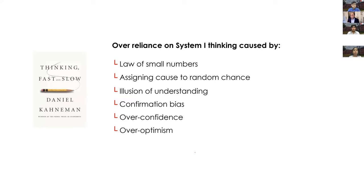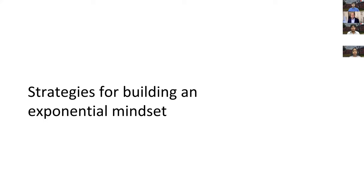This over-reliance on System 1 thinking prevents us from understanding exponential worlds, because it is caused by factors like the law of small numbers, assigning cause to random chance, an illusion of understanding — thinking you understand the future just because you understand the recent past — a confirmation bias, and overconfidence and over-optimism. There are lots of data showing that people have overconfidence in their own abilities to predict. They have confirmation bias, liking to seek information that reconfirms what they already know. All these biases fundamentally mean that as human beings, we are not very good at capturing or visualizing exponential worlds.